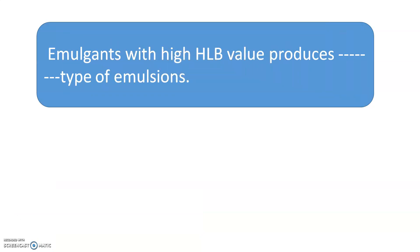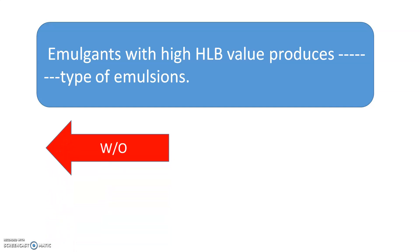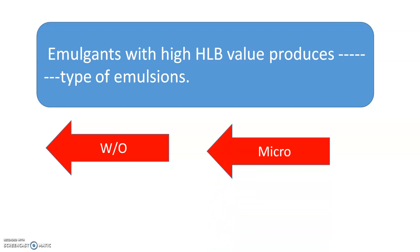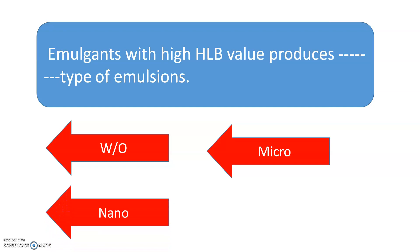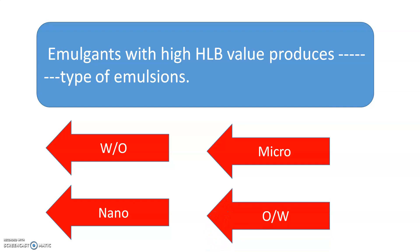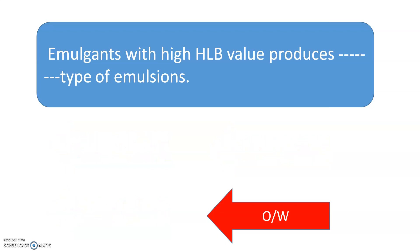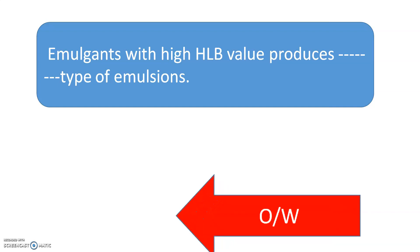Emulgents with high HLB value produce which type of emulsions? The options are: W/O type, micro type, nano type, or O/W type of emulsions. The correct answer is: emulsions with high HLB value produce O/W type of emulsions.